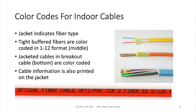One thing to always remember is that every premises cable and every outside plant cable will be printed on the outside of the cable to indicate, typically, the type of fibers and the number of fibers, and any other special information related to that particular cable. Indoor premises cables will also have a UL symbol indicating they've been tested for flammability.